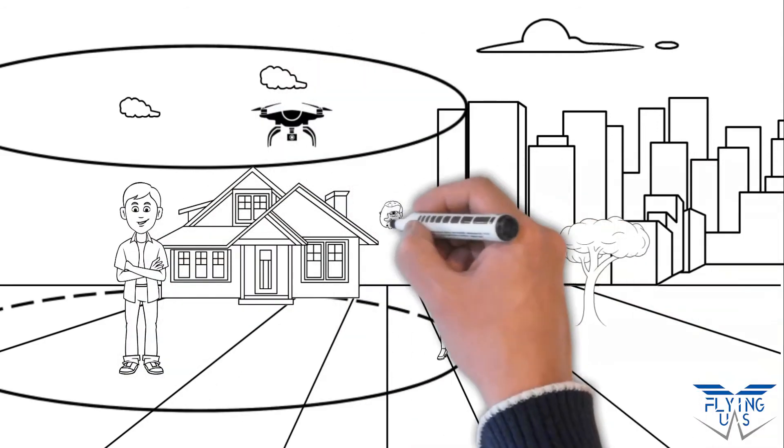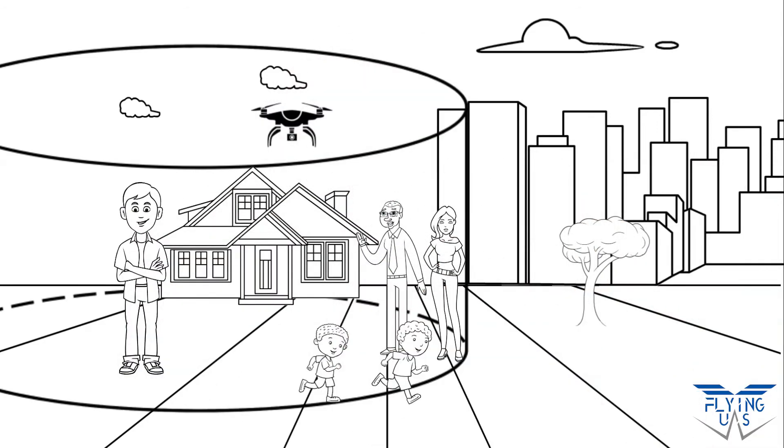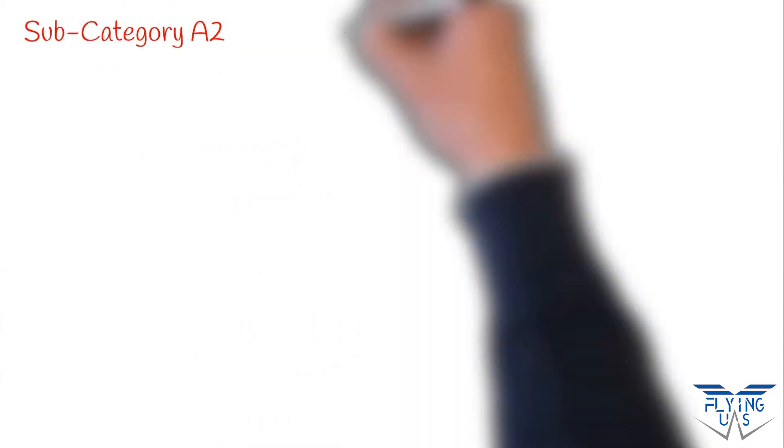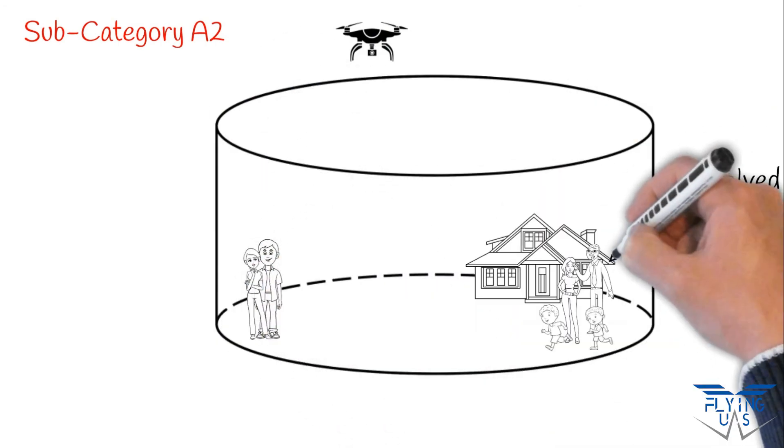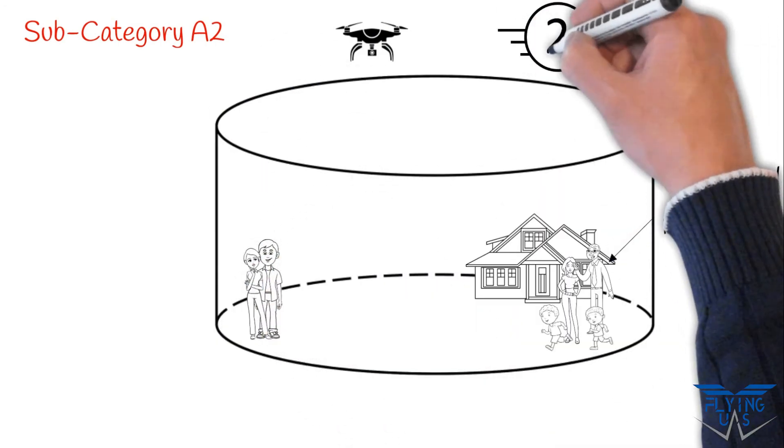Subcategory A2 can be used by drones weighing more than 250 grams or with drones belonging to class C2. Neither assemblies of people nor uninvolved people can be overflown. From the latter, a variable horizontal distance must be maintained. The distance depends on the drone speed and height.